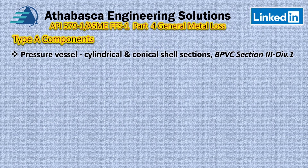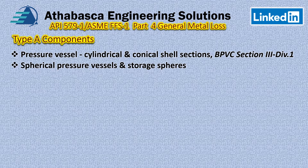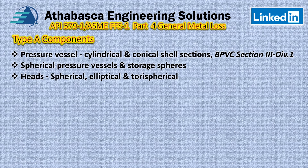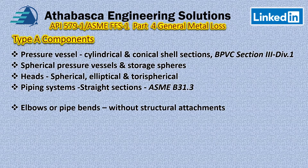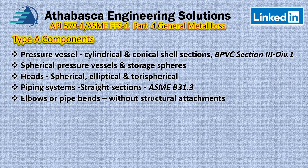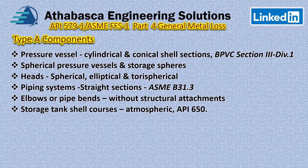Type A components include pressure vessels — cylindrical and conical sections per Boiler and Pressure Vessel Code Section 8 Division 1 — as well as spherical pressure vessels and storage spheres. Heads, spherical, elliptical, and torispherical, also fall under Type A. We also have piping systems, really for straight sections; the one I've used this for was B31.3. For elbows or bends without structural attachments it can be used, and it can be used for storage tank shell courses — the most common example being API 650.